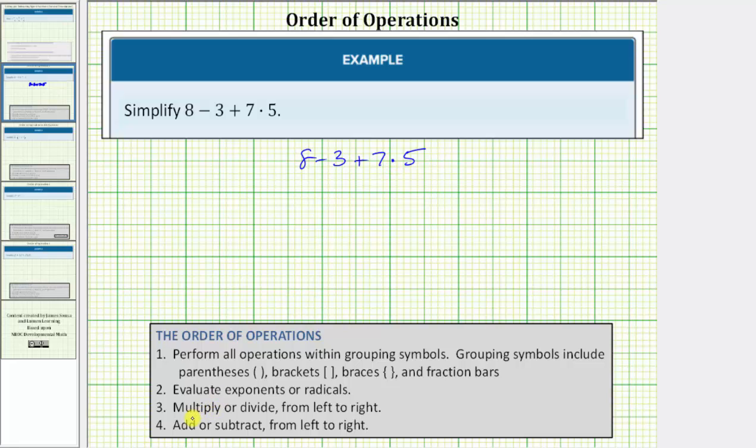Step three, we multiply or divide from left to right. Notice how the expression does have multiplication. So for the first step, we need to find this product. 7 × 5 = 35. And therefore, the expression simplifies to 8 - 3 + 35.